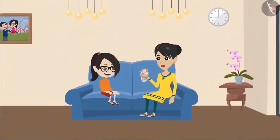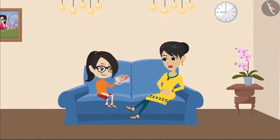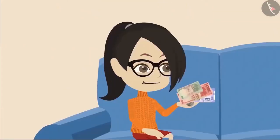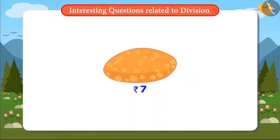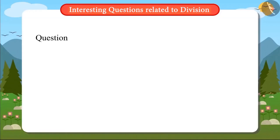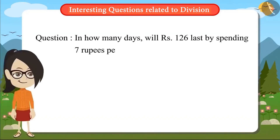Today, Mummy has given Rs. 126 as pocket money to Vandana and asked in how many days she will be able to spend this money. From my school canteen, I buy one kachauri each for Rs. 7. So like this, every day I spend Rs. 7. Vandana now has to find out in how many days she will be able to spend Rs. 126 by spending Rs. 7 per day. Can you help Vandana find this out?